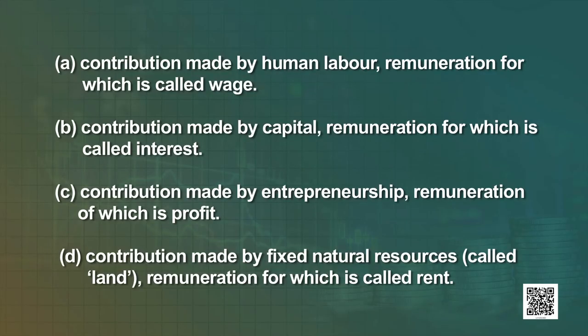There may be four kinds of contributions that can be made during the production of goods and services. A: contribution made by human labour, remuneration for which is called wage. B: contribution made by capital, remuneration for which is called interest. C: contribution made by entrepreneurship, remuneration of which is profit. D: contribution made by fixed natural resources called land, remuneration for which is called rent.